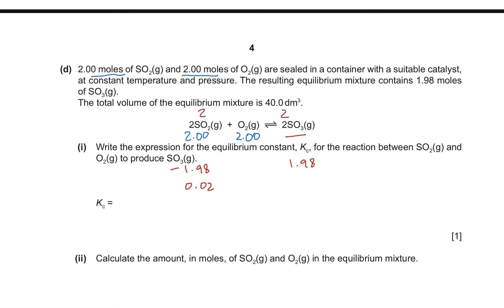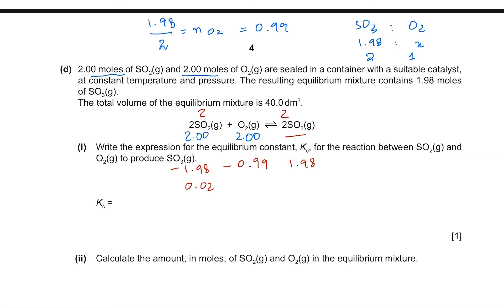Between SO3 and O2 the ratio is different. From the equation the ratio of SO3 to O2 is 2:1, so oxygen used up equals 1.98 divided by 2, which is 0.99 moles. Since 0.99 moles of oxygen were used up from the original 2 moles, 1.01 moles of oxygen remain at equilibrium.